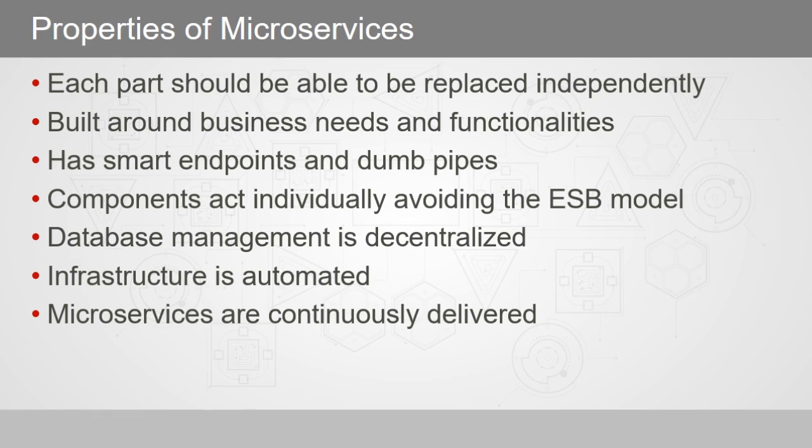Most agree that there's no hard definition for microservices, but most agree there are properties that make them up. First, each part should be able to be replaced independently from each other. Also, microservices are built around business needs and functionalities. Microservices also have smart endpoints and dumb pipes — pipes don't know what they're doing, only where they're going. Next, components act individually, avoiding the ESB model. Buses are bad in a microservices architecture. Database management is decentralized and infrastructure is automated. And true to DevOps, microservices are continuously delivered.